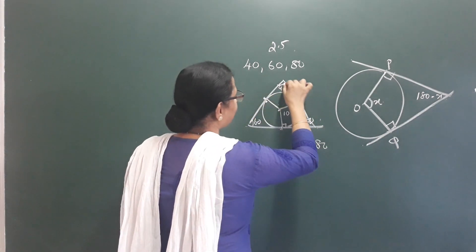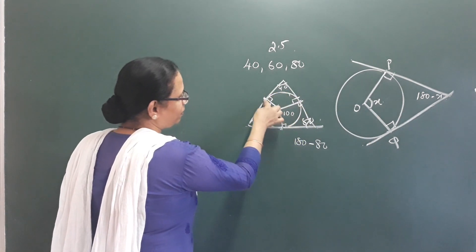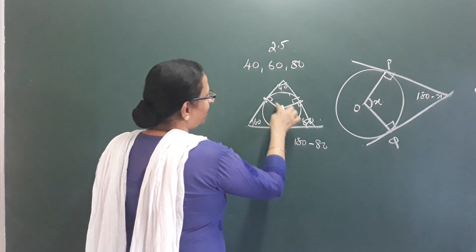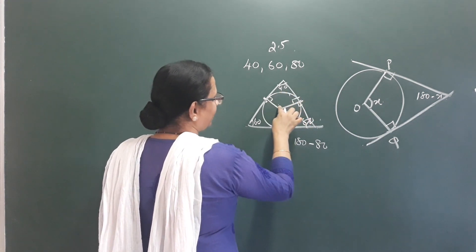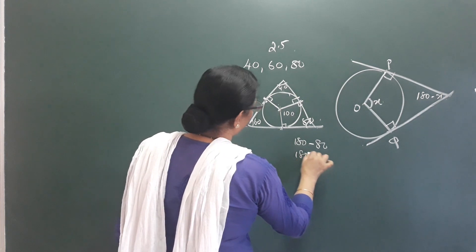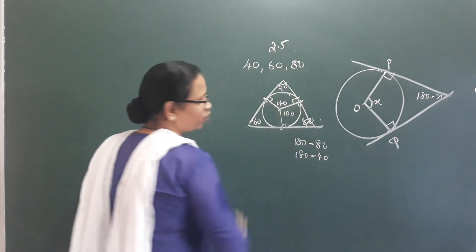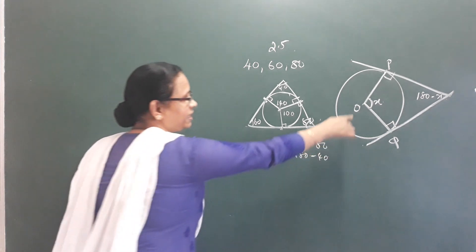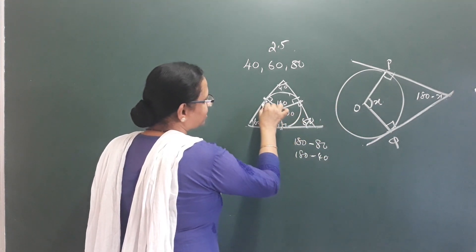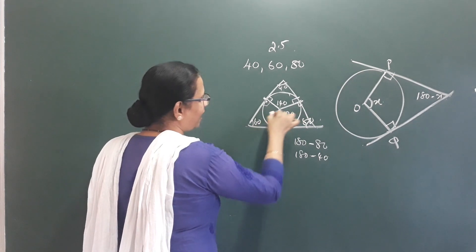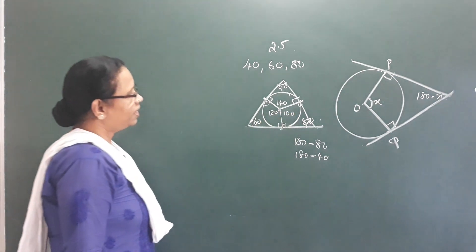This is perpendicular. This is 90. This is 90. This is 180 minus 40, that means this is 140. We have learned the theory. This is 90. This is 90. This is 90 and 90. This is 120. This is the construction.